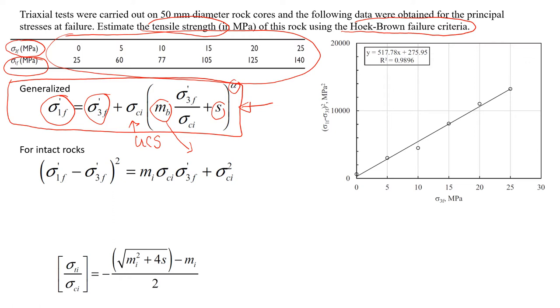So in this video, I would like to show you how we use a special case called intact rocks. Typically, it's a small sample that we test in a triaxial test. Or maybe some exposure of rock wall with no discontinuities. For this particular case, you will see that we make assumptions that S is equal to 1, alpha is equal to 0.5.